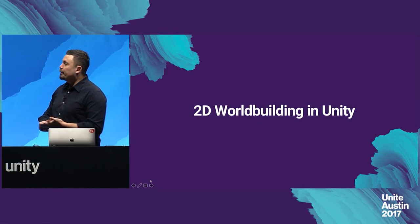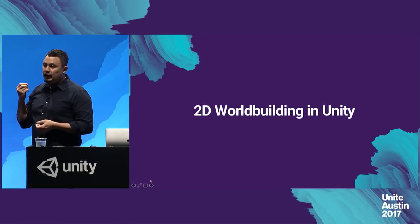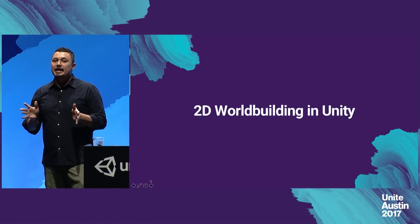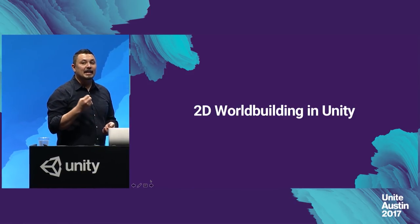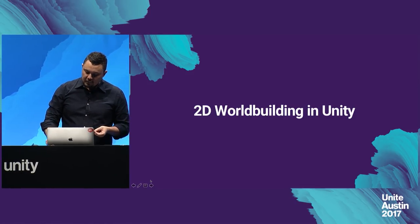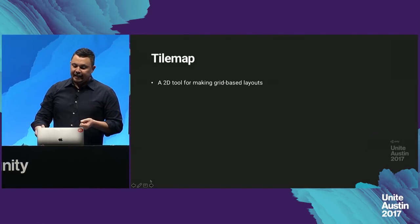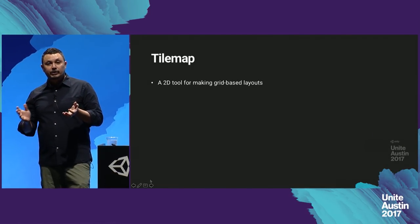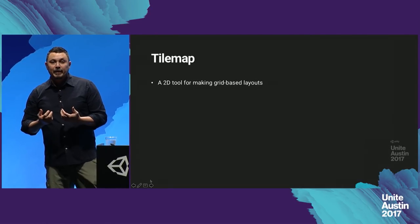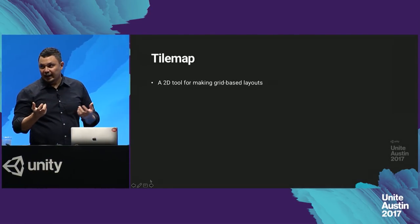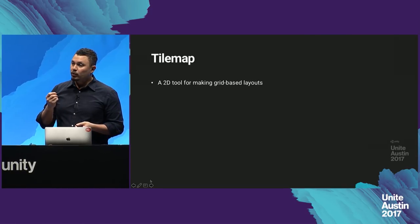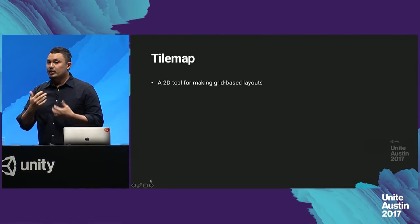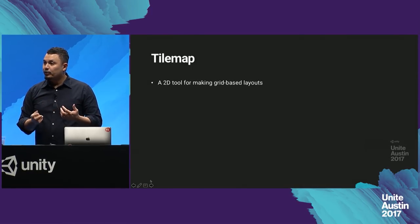Today I want to talk about 2D world building, because with 2017.2 we've released the first of our major world building tools, and that's TileMap. It's fundamentally a 2D tool for making grid-based layouts. The way we've implemented it in Unity is very flexible and very powerful. We're not going to spend too much time in slides — I'm going to spend a lot of time in Unity showing you how the tool works.